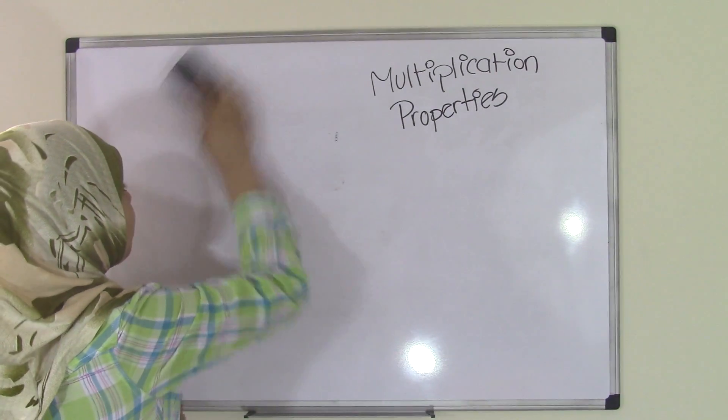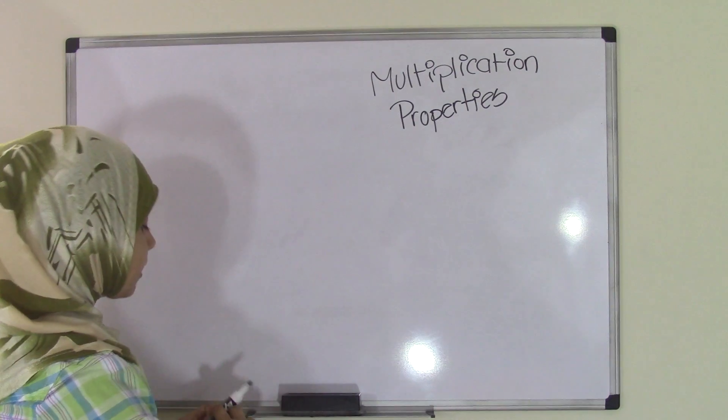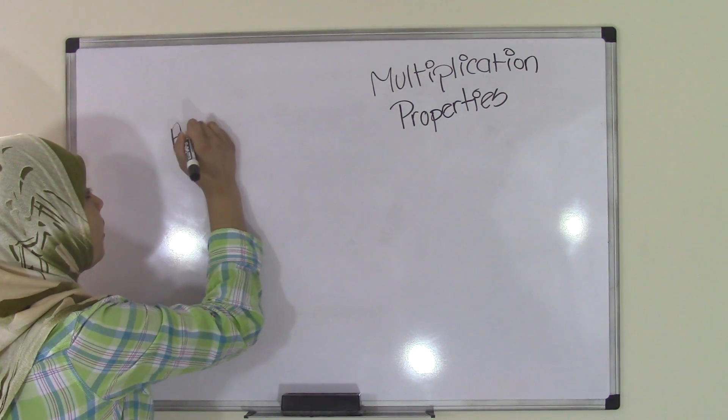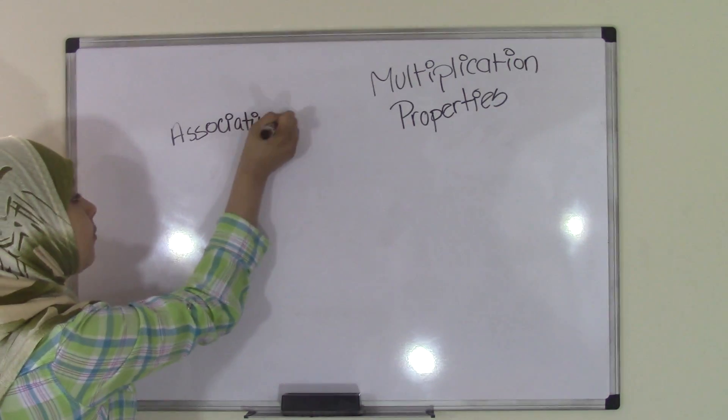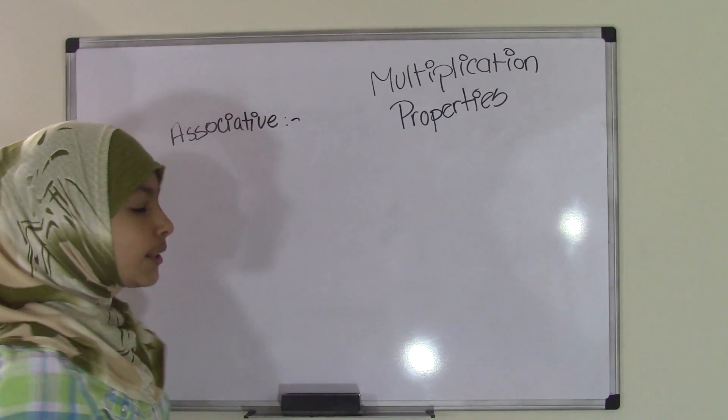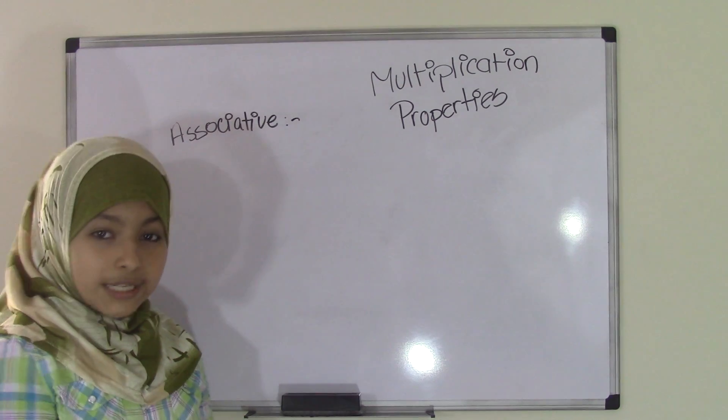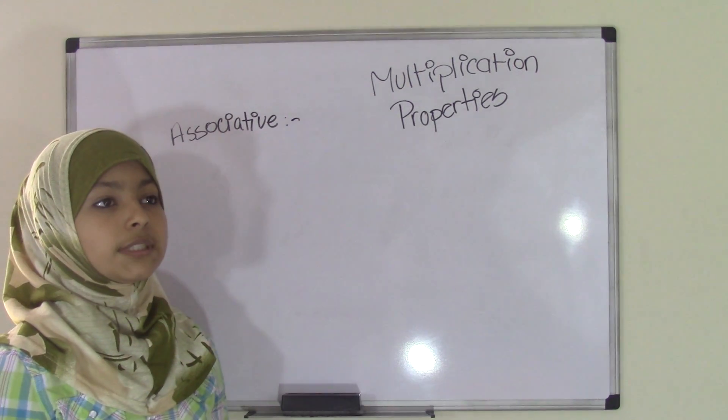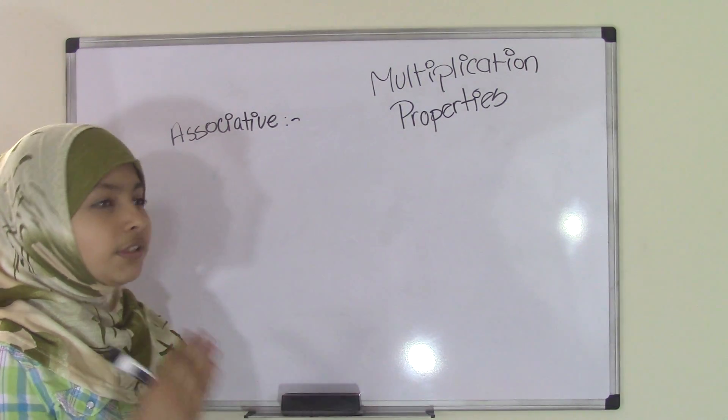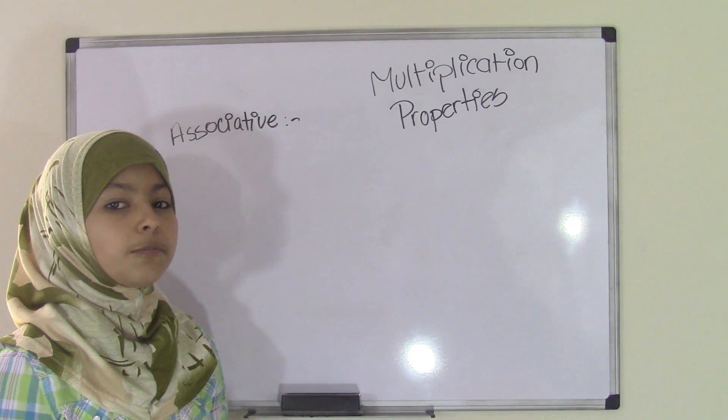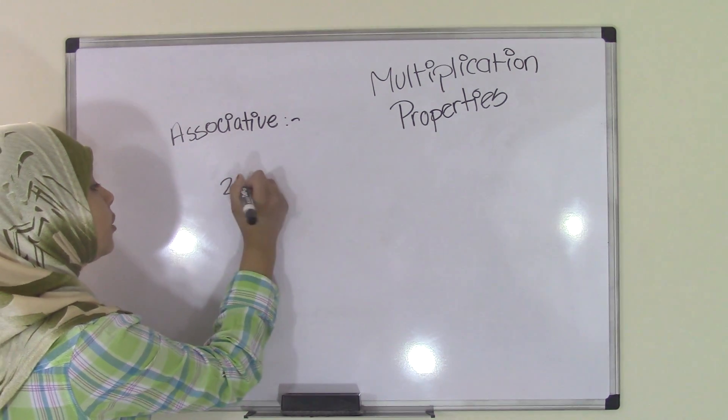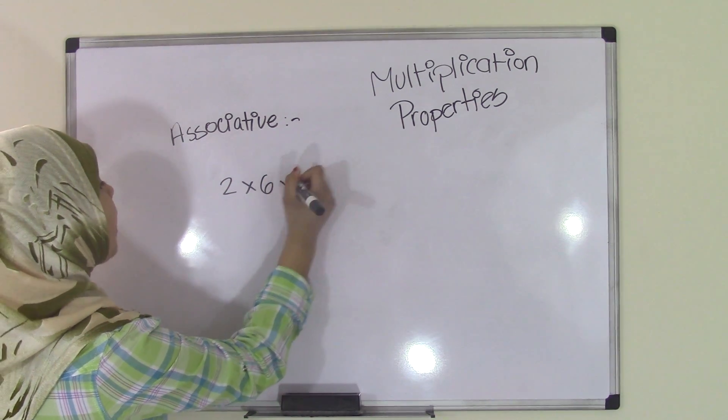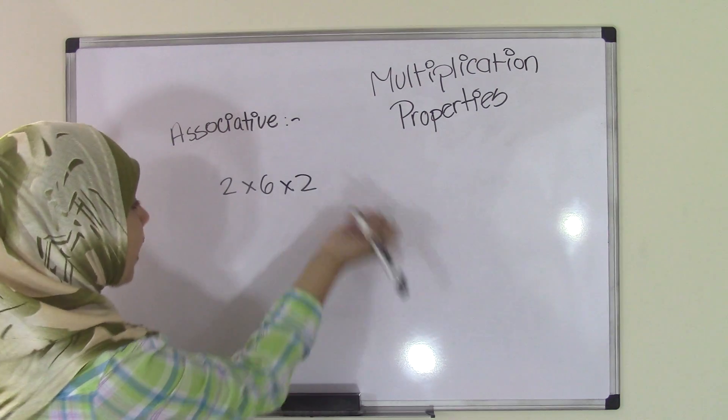Now the second property of multiplication is the associative property. In the associative property, you have three numbers and two of them are in parentheses. It's pretty much like the commutative property, but the commutative property does not handle parentheses. So in the associative, let's say we have 2 times 6 times 2 again.